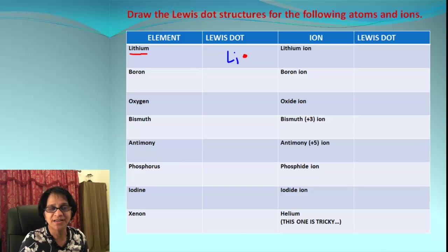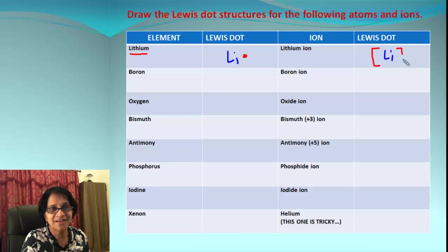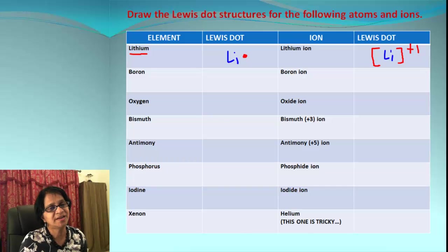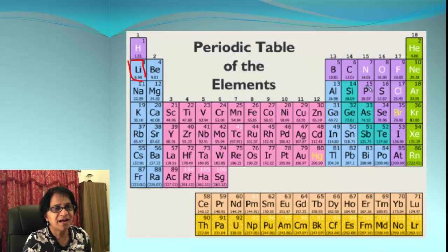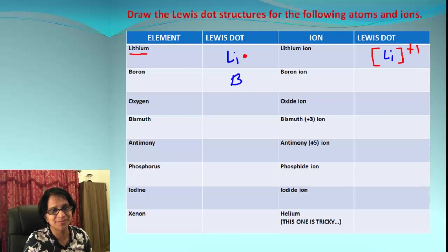To draw the Lewis dot structure for lithium, we write Li with one single electron around it. When lithium forms an ion, it uses the octet rule — it will try to lose that one electron to complete its octet. So lithium ends up with no electrons around it. It's an ion now, so we put parentheses, and since it loses one electron, we get a positive one charge. Next example is boron, which is in group number 13, so it has three valence electrons.